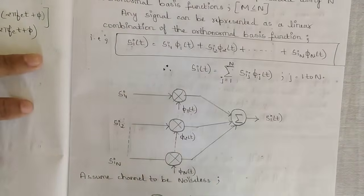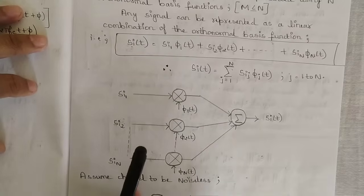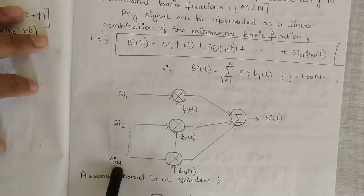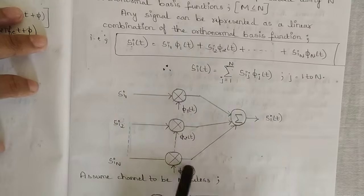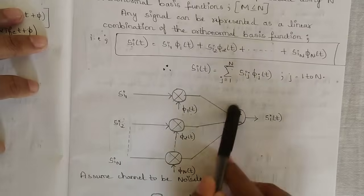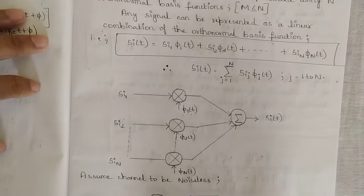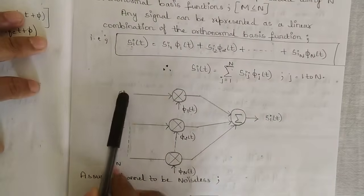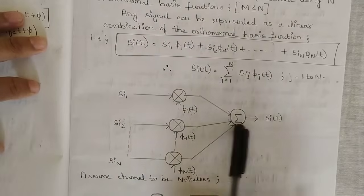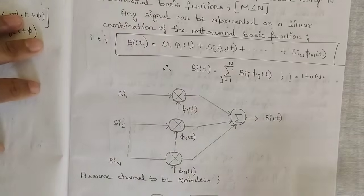For a noiseless channel, this expression can be represented as a block diagram. The input combinations are the energy signals SI₁, SI₂, up to SIₙ, passed through multipliers φ₁(T), φ₂(T), up to φₙ(T). These are all summed together to produce SI of T. The products of each multiplier are added up in all cases, giving us the total SI of T.